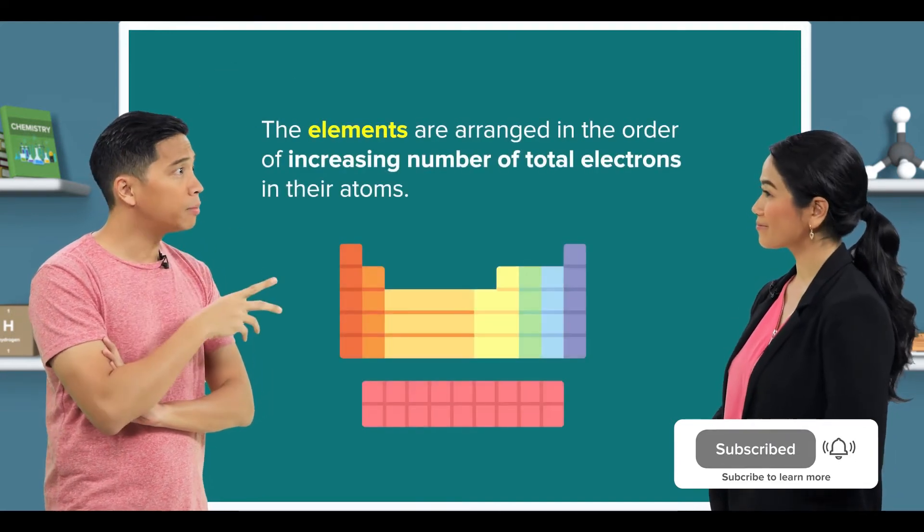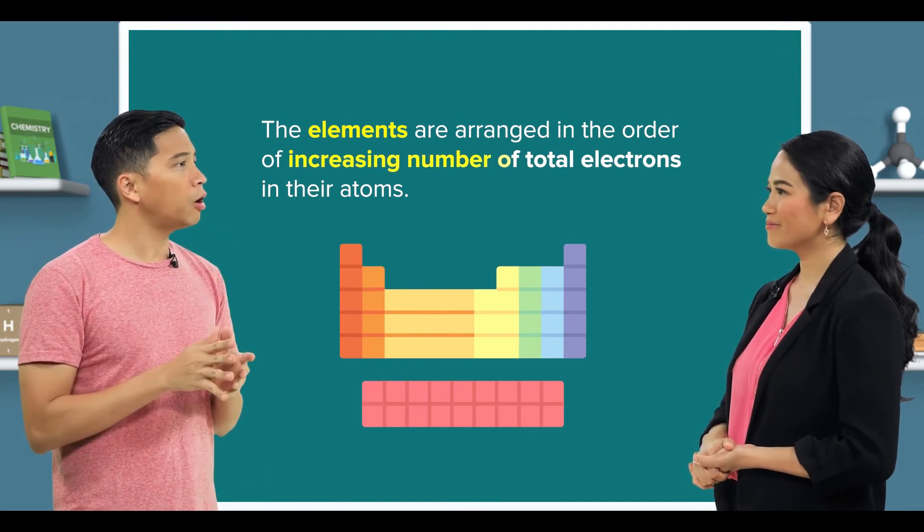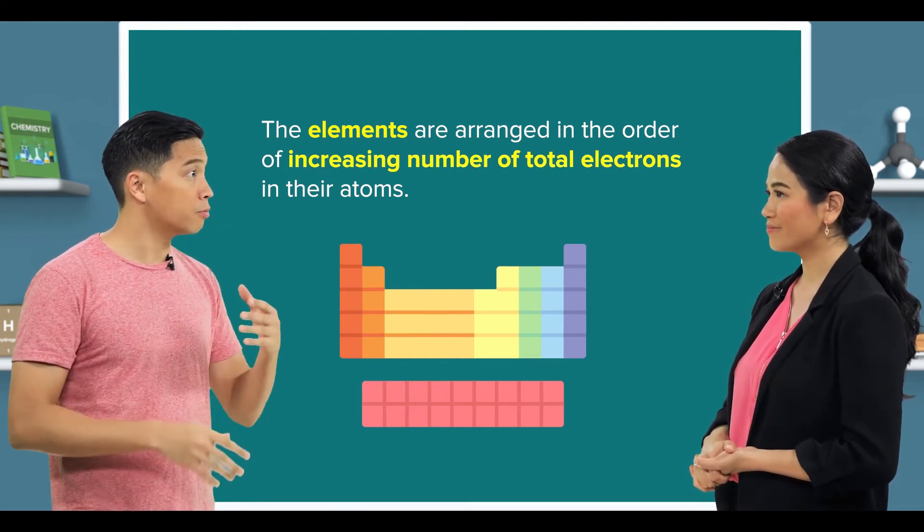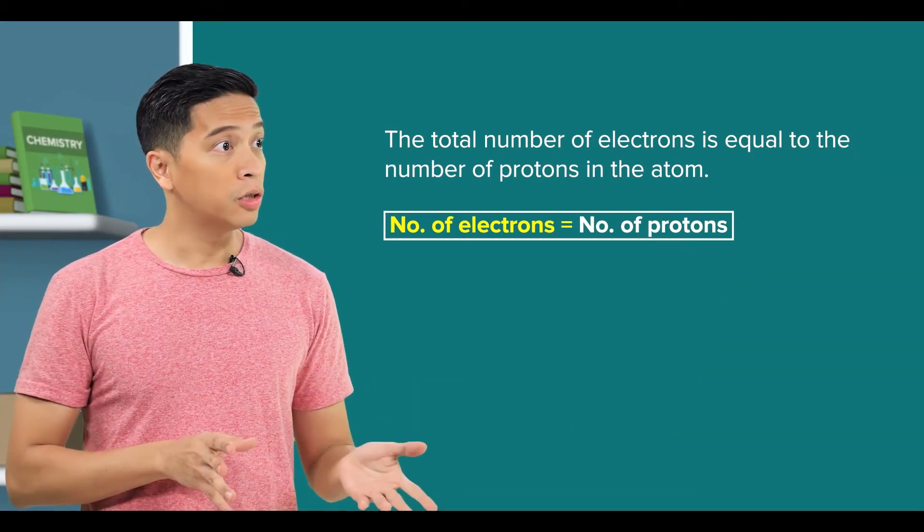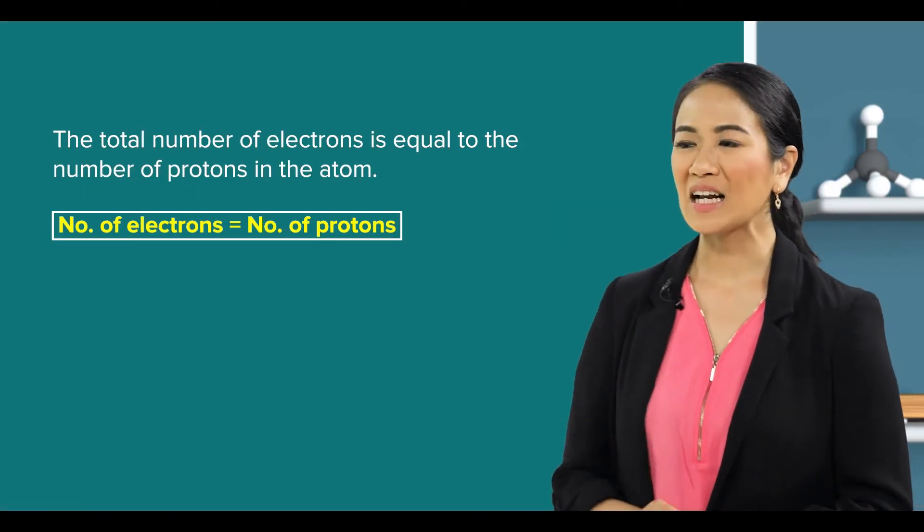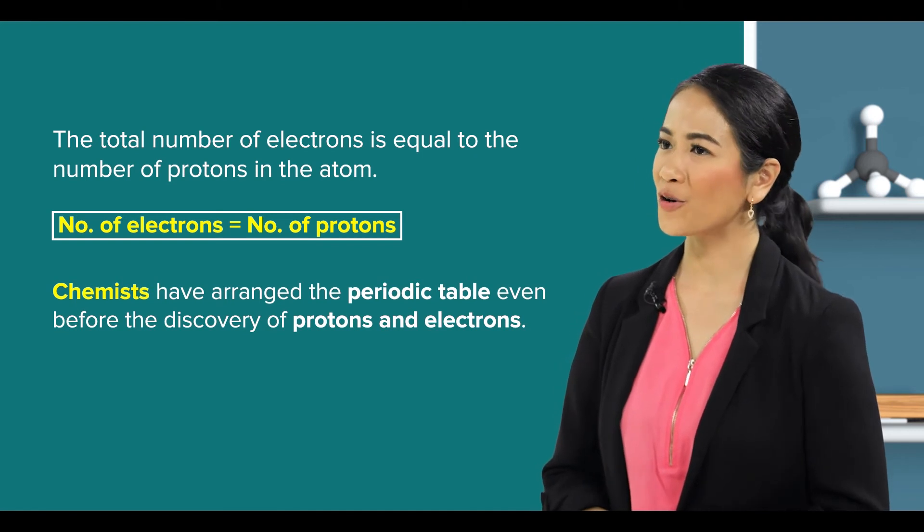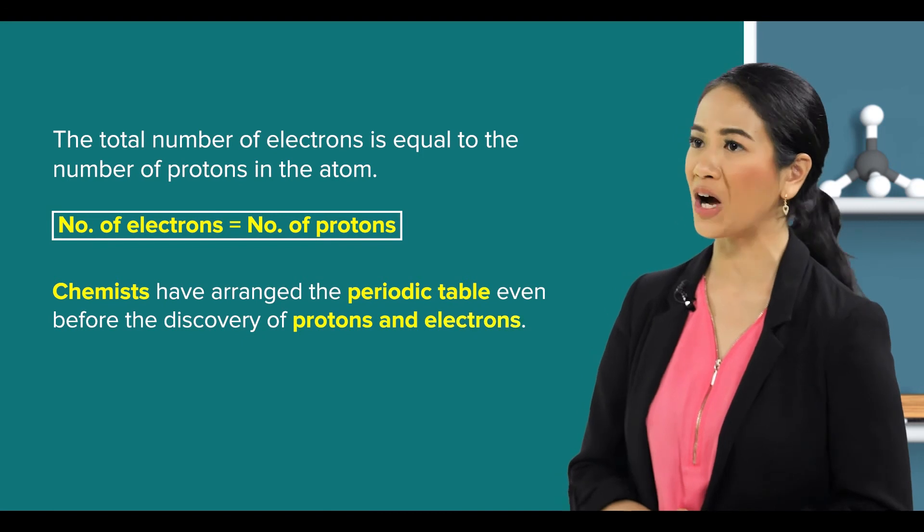So, the elements are now arranged in the order of increasing number of total electrons in their atoms too? Yes. And that's because the total number of electrons is equal to the number of protons in the atom? Correct. But do note that chemists have arranged the periodic table even before the discovery of protons and electrons.